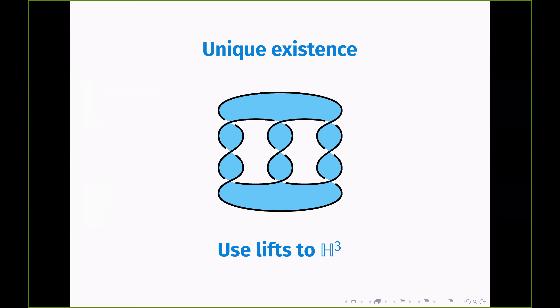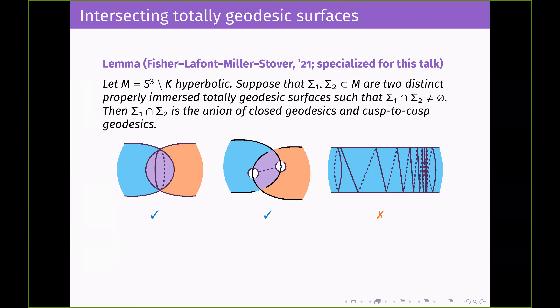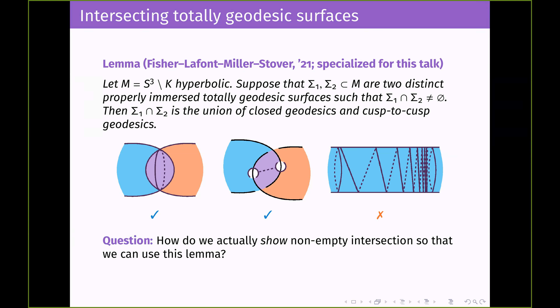Now let's talk about this existence property. We want to compare a known totally geodesic surface to a candidate totally geodesic surface, and one way to compare surfaces is to look at their intersection. If you have two totally geodesic surfaces in a hyperbolic knot complement with a non-empty intersection, then their intersection is the union of closed geodesics and cusp-to-cusp geodesics — none of their intersections just wind off into nothingness within the manifold. It either closes up or shoots all the way out. But we actually have to show that these surfaces would intersect.